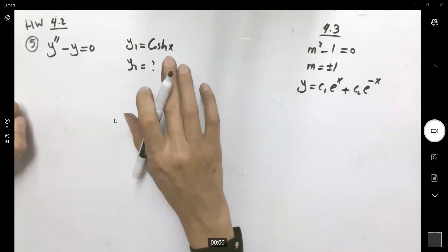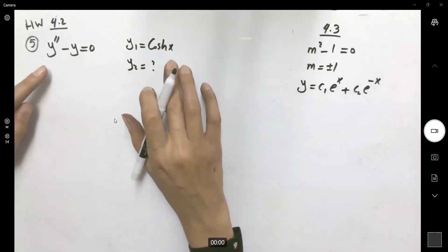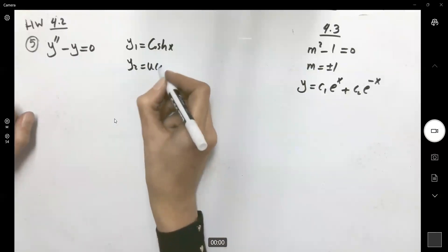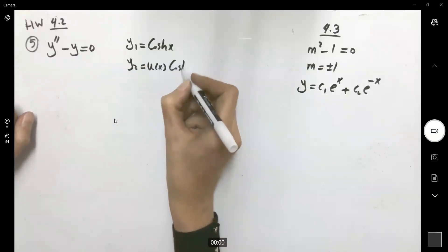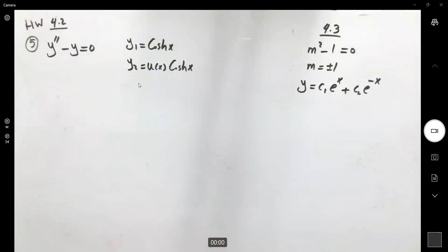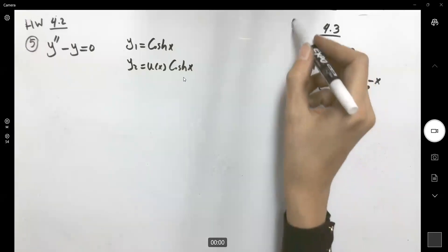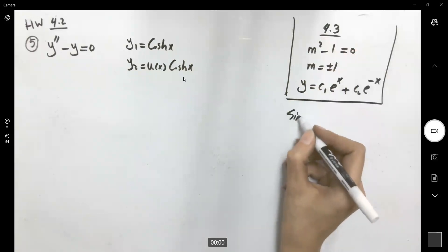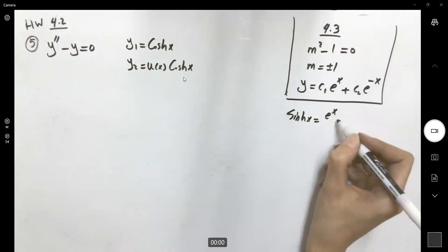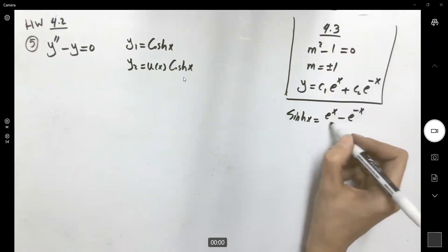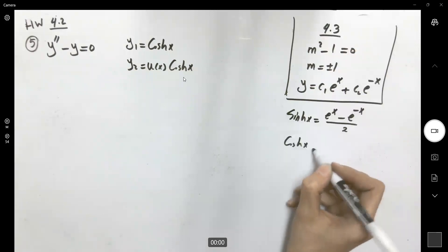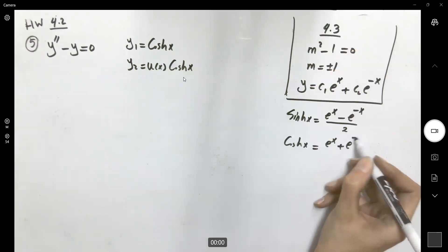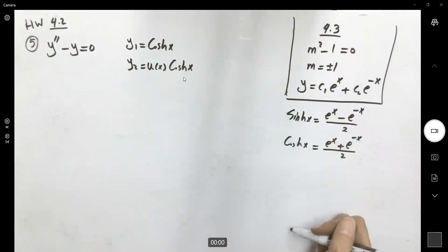Our first solution is given to us, so let us find the second solution. We know the second solution has the form u(x) times cosh(x). Recall the definitions: sinh(x) = (eˣ − e⁻ˣ)/2, cosh(x) = (eˣ + e⁻ˣ)/2, and tanh is their ratio; coth is the reciprocal.